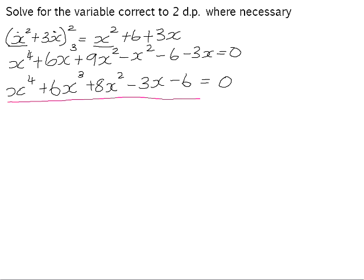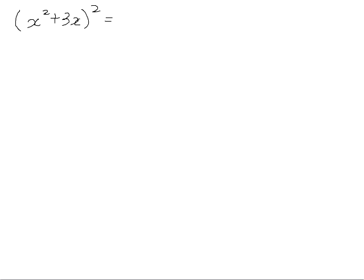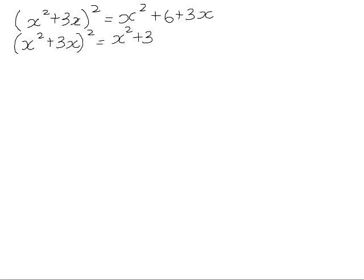If we look at the structure of the original equation, here we have an expression of x squared plus 3x. Here we have an x squared, and here we have a 3x. Because we have that repeated expression, we are going to use a technique called substitution in order to solve this equation and get it into a more manageable form. Starting again with the original equation, and rearranging the right-hand side so that the x squared and the 3x are together, it becomes quite obvious that x squared plus 3x is a repeated expression.